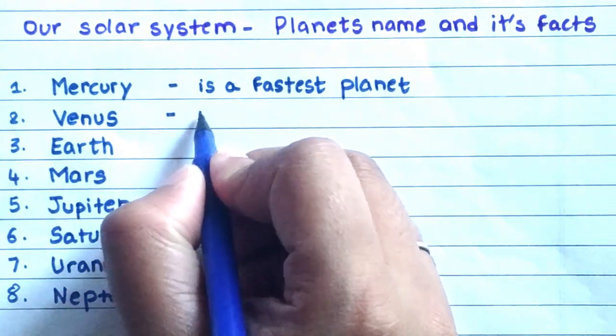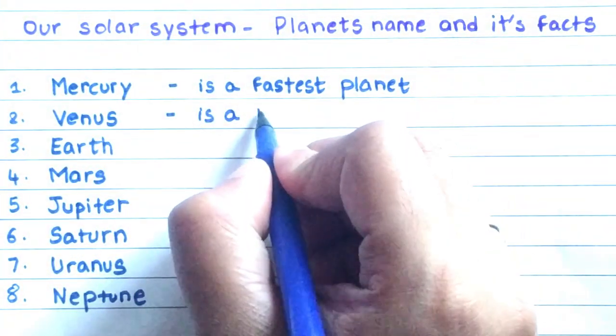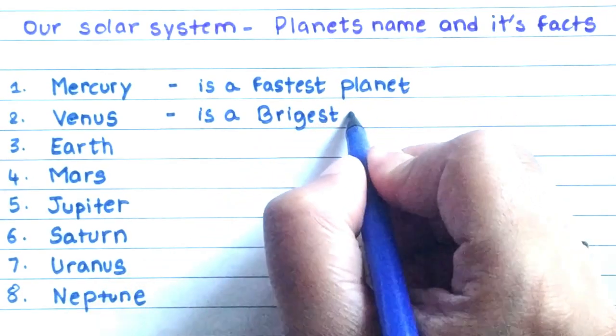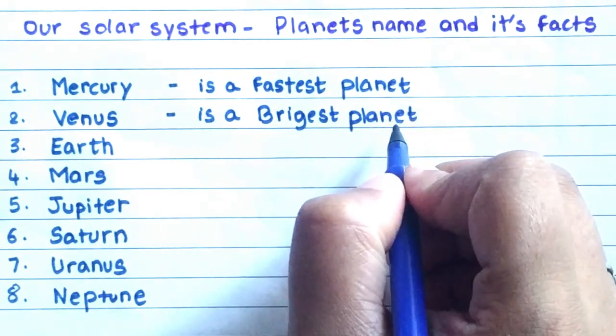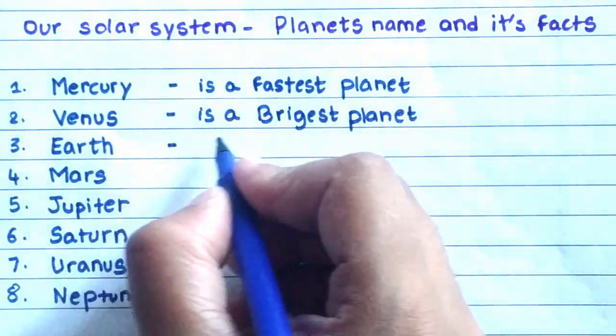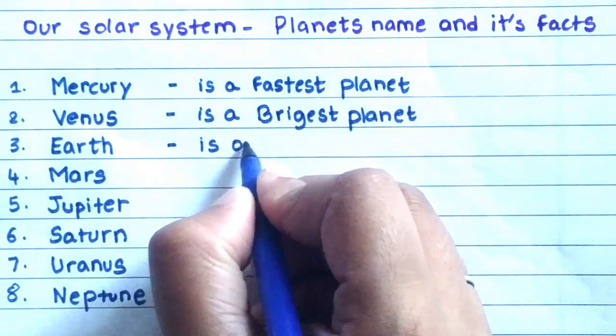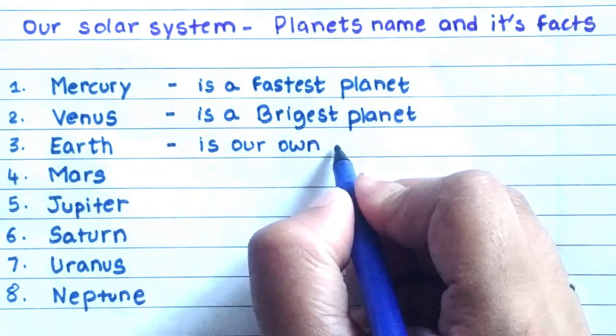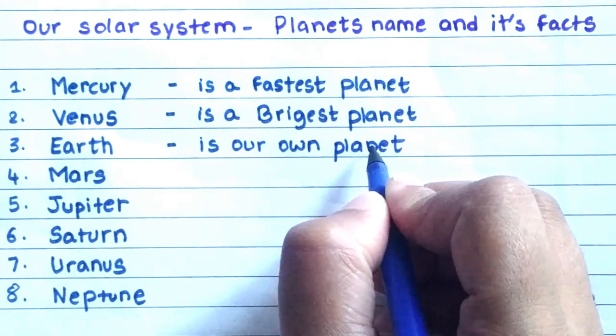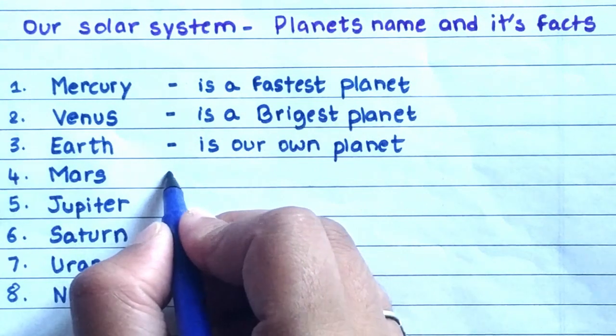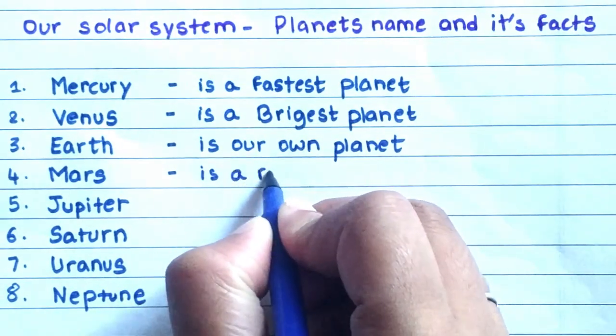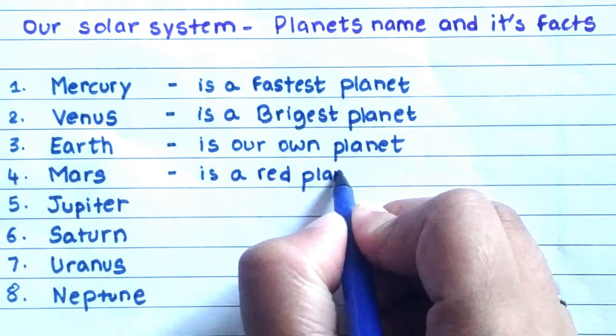Venus. Venus is a brightest planet. Earth. Earth is our own planet.